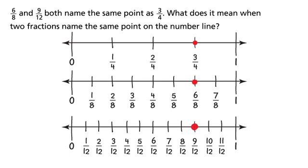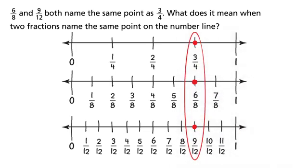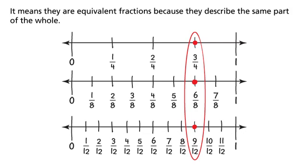Six-eighths and nine-twelfths both name the same point as three-fourths. What does it mean when two fractions name the same point on the number line? It means they are equivalent fractions because they describe the same part of the whole.